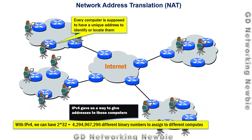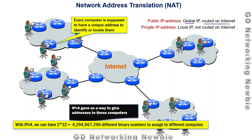Different techniques were introduced, and network address translation is one of them. It is based on the idea of public and private IP addresses. Public IP addresses are global addresses that can be routed on the internet, while private IP addresses are local and not routed on the internet.